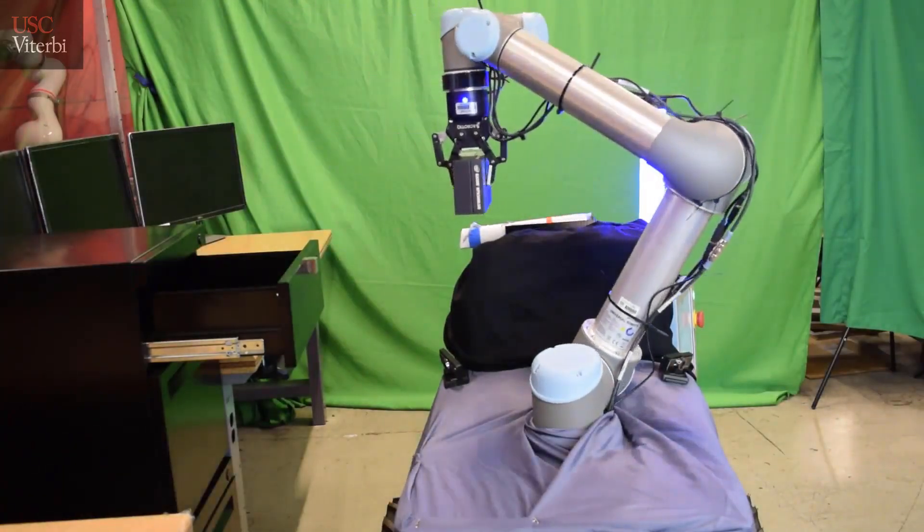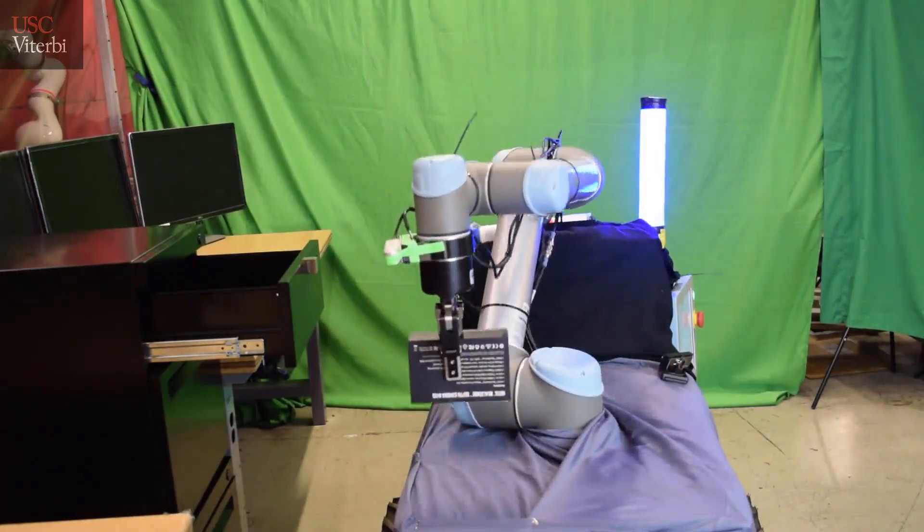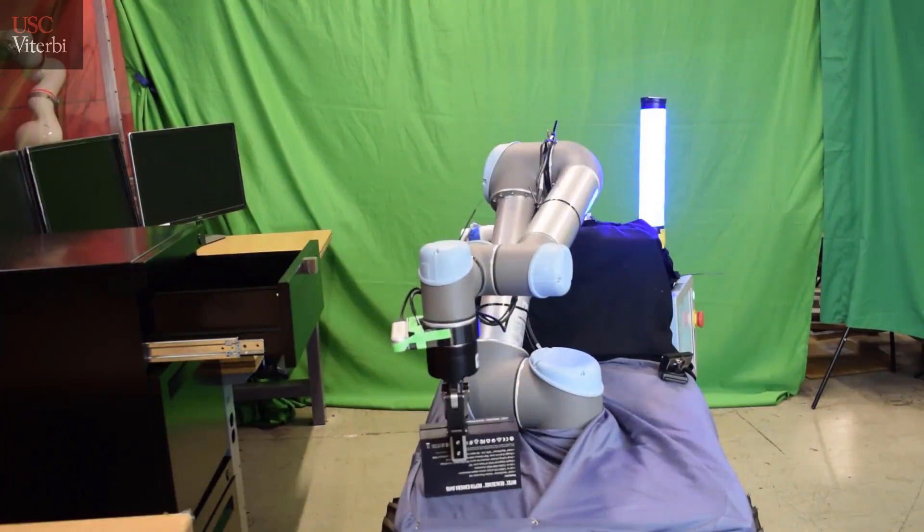People are already using mobile robots with a UV column to perform disinfection. Every surface in the line of sight can be treated using this method. However, most human-inhabited spaces include occluded surfaces. UV light from the column won't treat such surfaces.